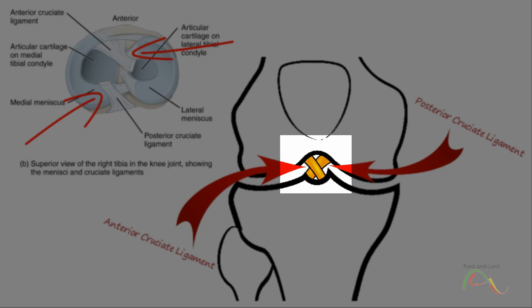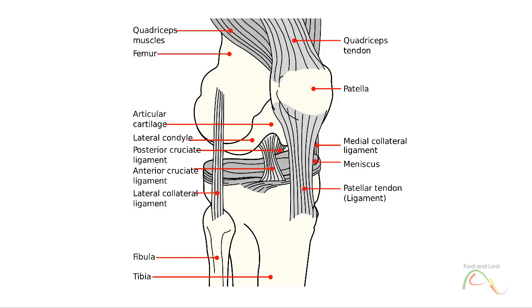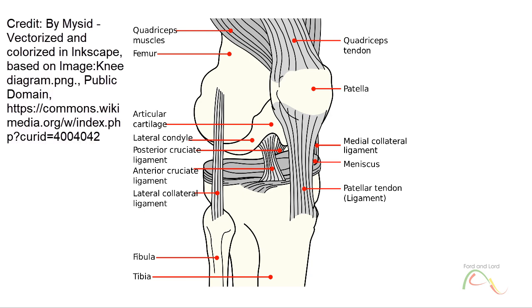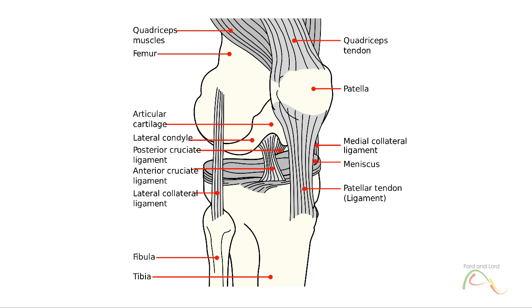Each ligament runs diagonally upwards to attach to the inner aspect of a femoral condyle. The posterior cruciate ligament is the stronger ligament. It serves to support the knee when it is flexed and weight-bearing, as when walking downhill. In this position, the posterior cruciate ligament prevents the femur from sliding anteriorly off the top of the tibia. The anterior cruciate ligament becomes tight when the knee is extended and thus resists hyperextension.